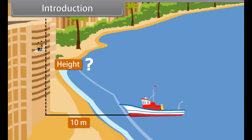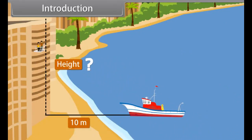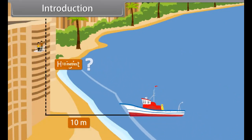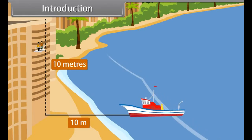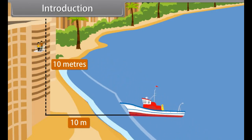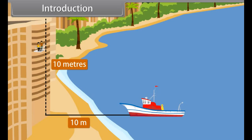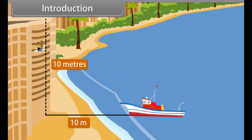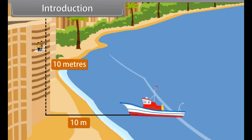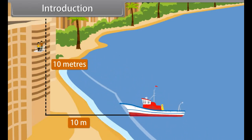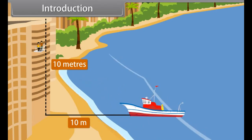The answer to your question — that is, the height of the building — is 10 meters. Anvesha used trigonometry to answer Vedika's question. In this lesson, you will learn about the relationship between angles and sides of a triangle.